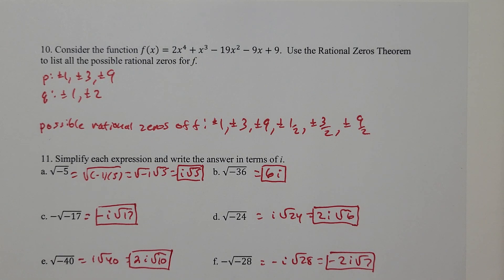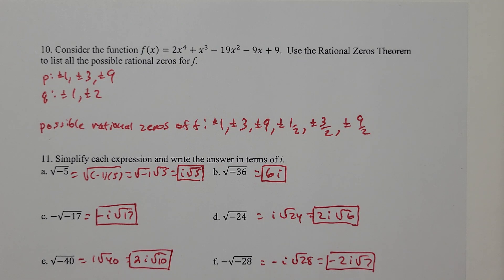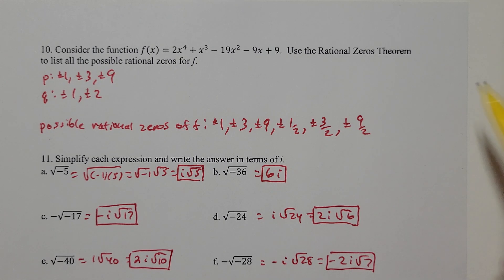Let's try problem 10 next. In problem 10, they want us to consider the function f of x equal 2x to the fourth plus x cubed minus 19x squared minus 9x plus 9. We're going to use the rational zeros theorem to list all the possible rational zeros for f.